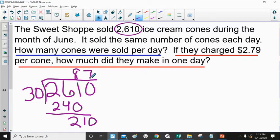Because three times seven is 21, so 30 times seven is 210. So I sell a total of 87 cones per day.